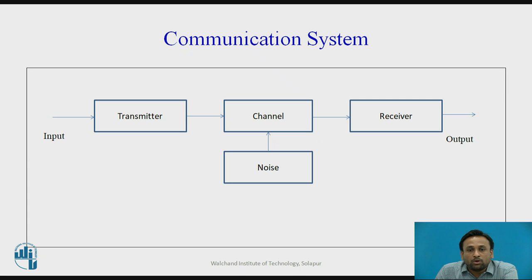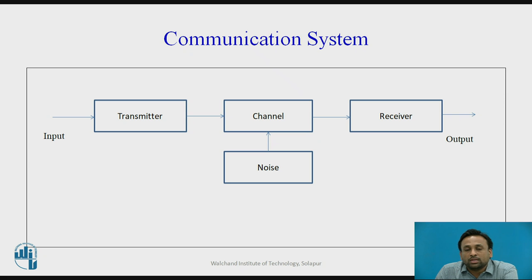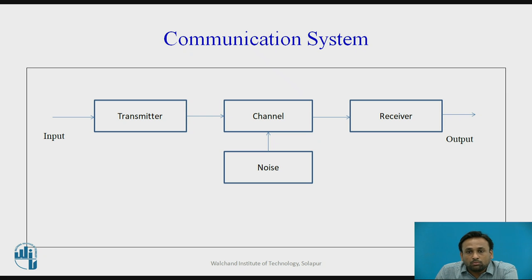These are the wired types, and next is wireless communication. In wireless, we may use radio communication, like radio signals transmitted as FM signals — that medium is known as a wireless medium. The last component is the receiver, where whatever information has been transmitted, we must recover that same original information.